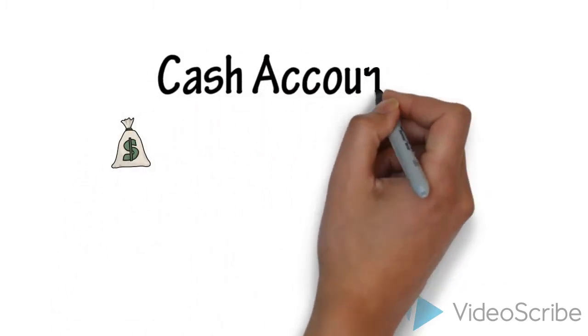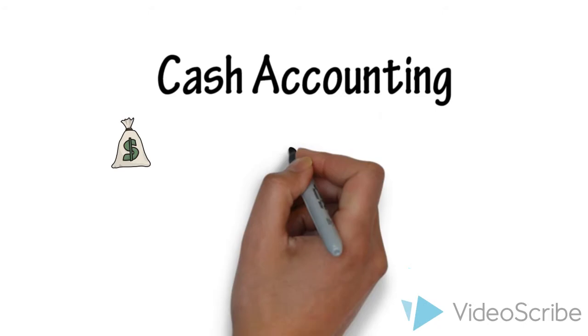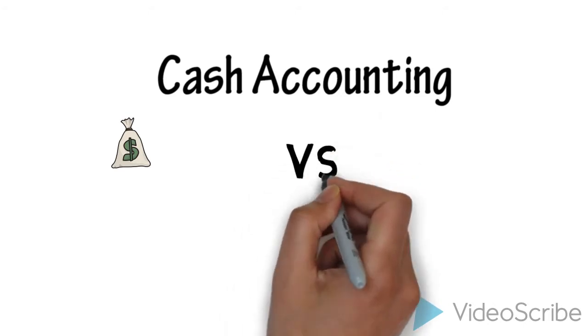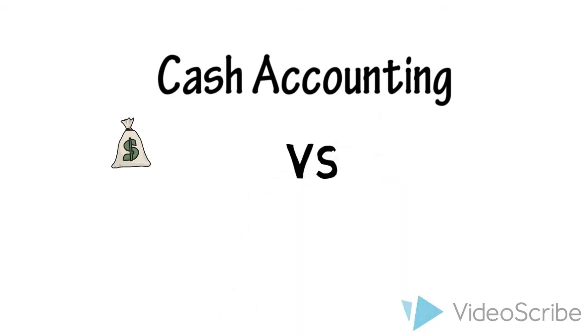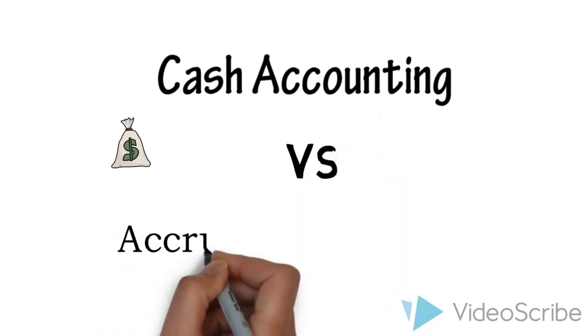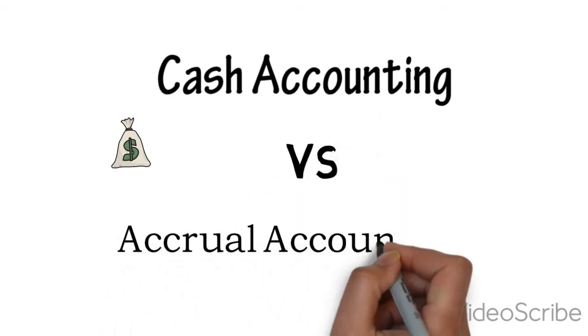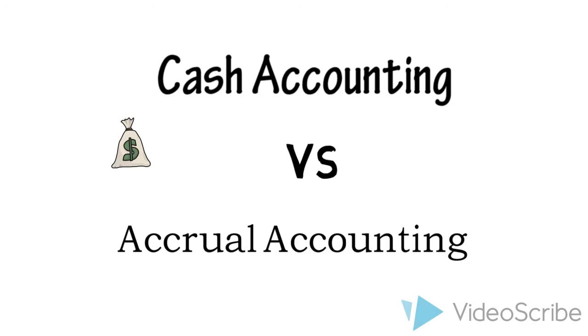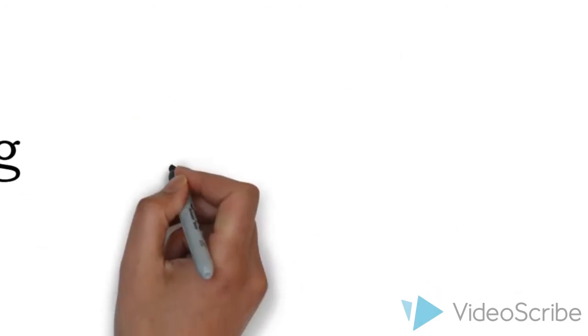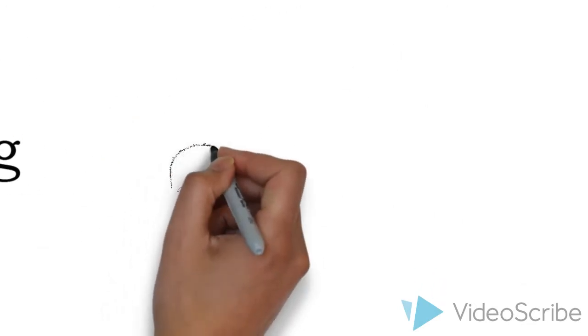Cash accounting recognizes only those transactions that involve cash. It's easy, it's verifiable, and it doesn't require judgment, but it ignores some very important information.